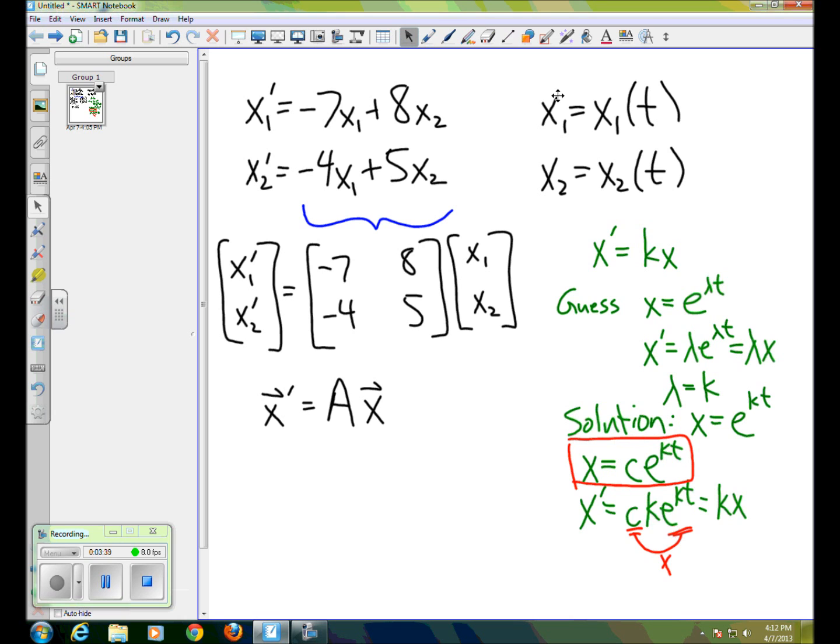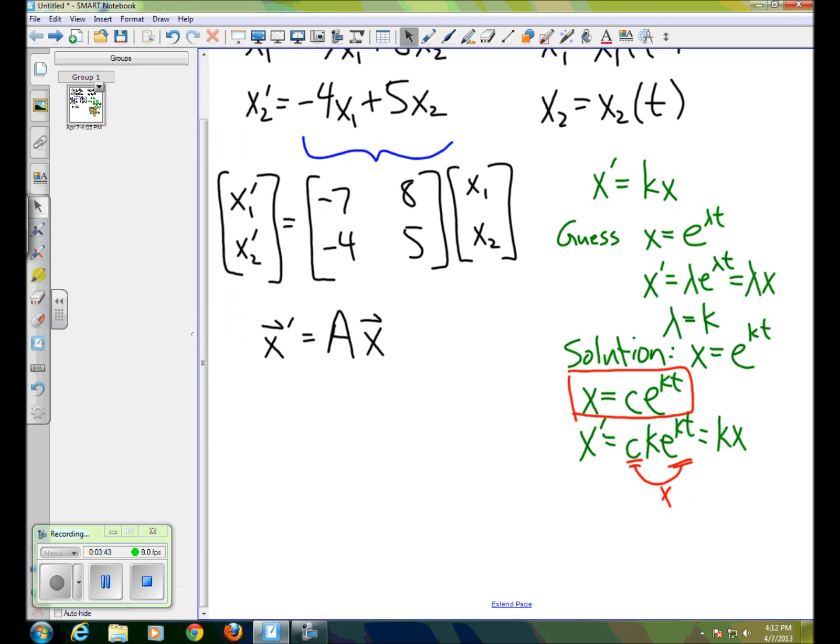So we could extend that analogy to our situation. We might guess here that our x, the vector x, looks like some e to the lambda t. But the problem is that e to the lambda t is a scalar, so it wouldn't make sense to do the multiplication a times the vector x. So we need to change our guess a little bit, and we'll actually put the constant in place that we found over here.